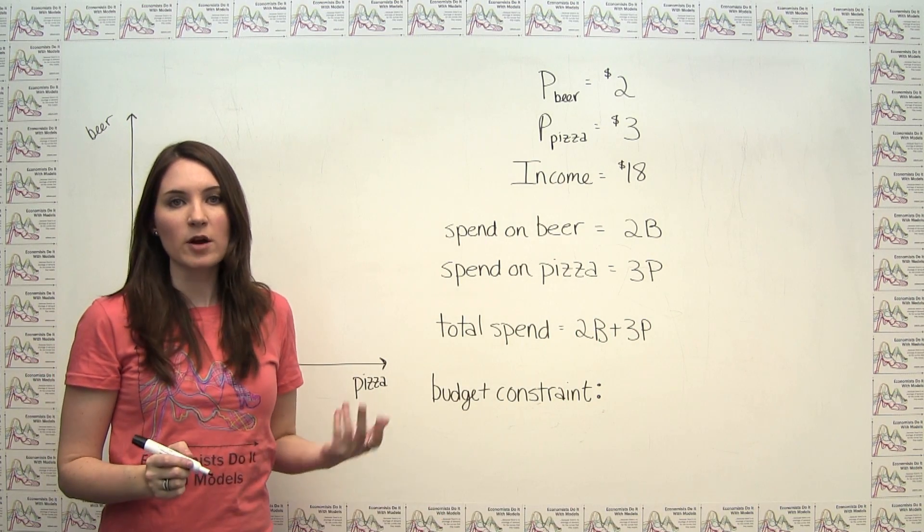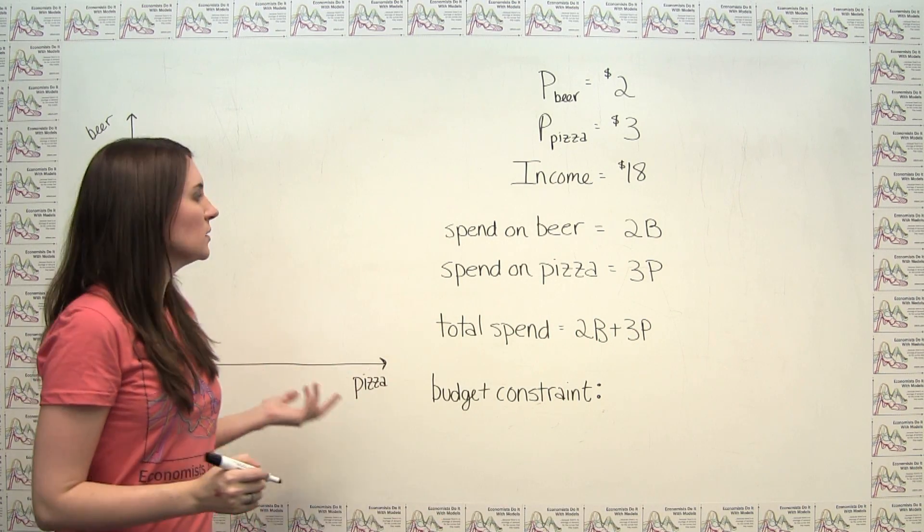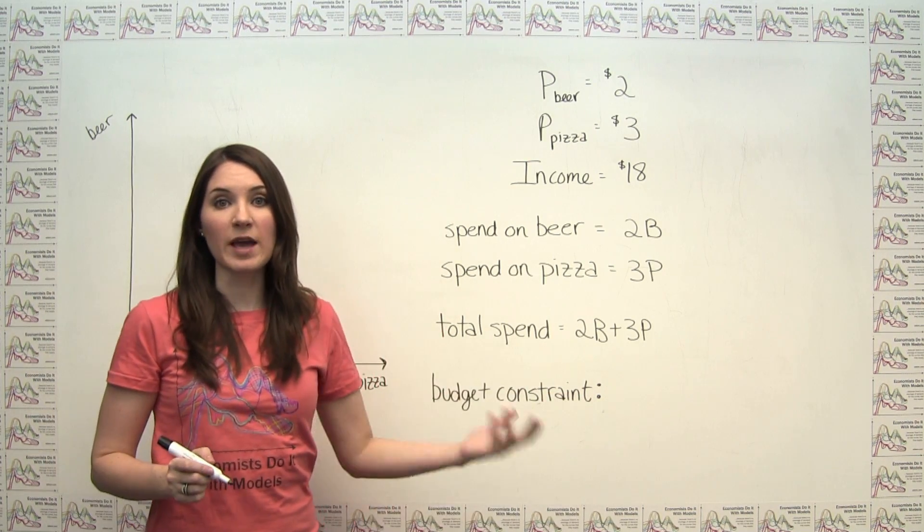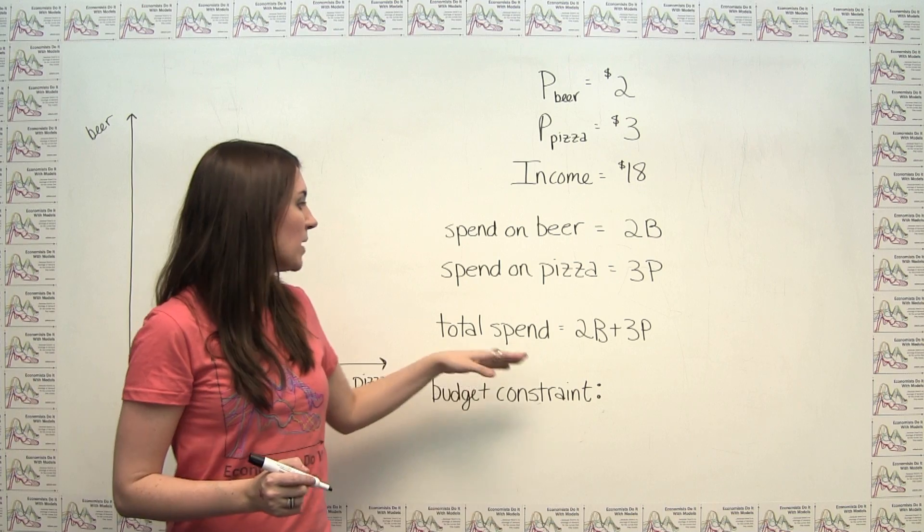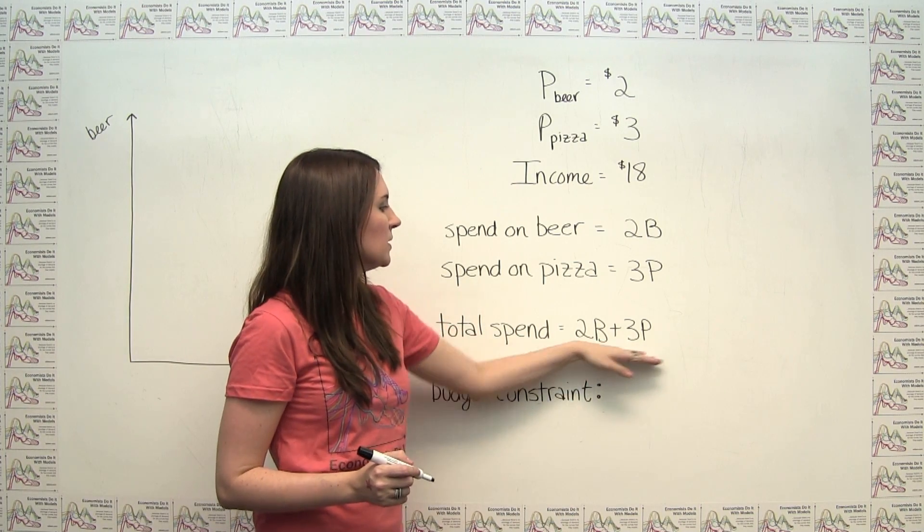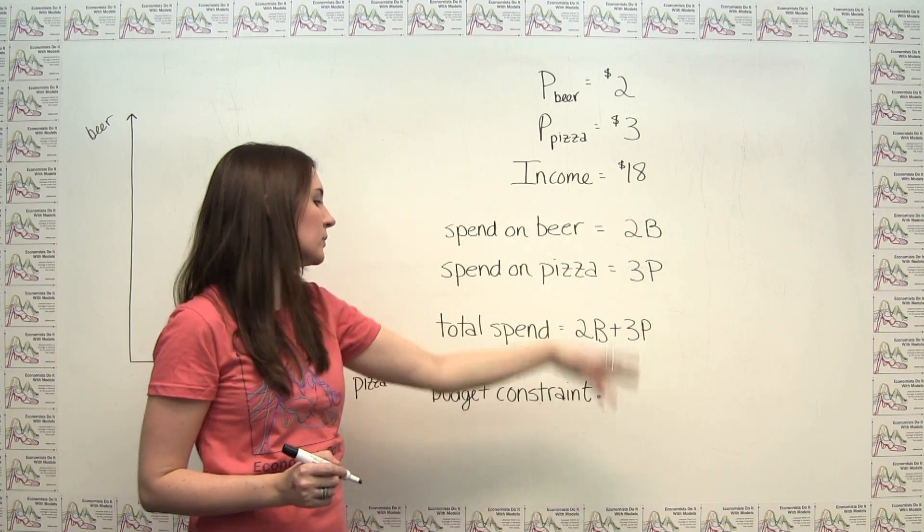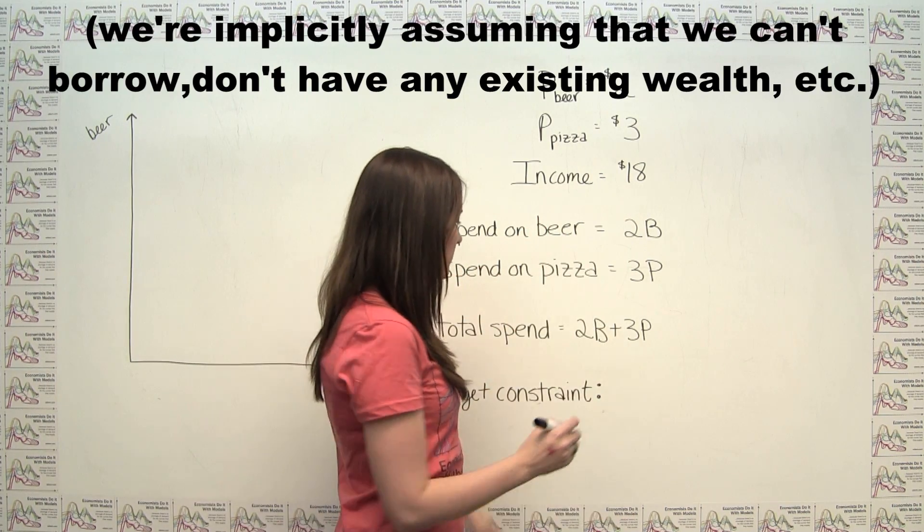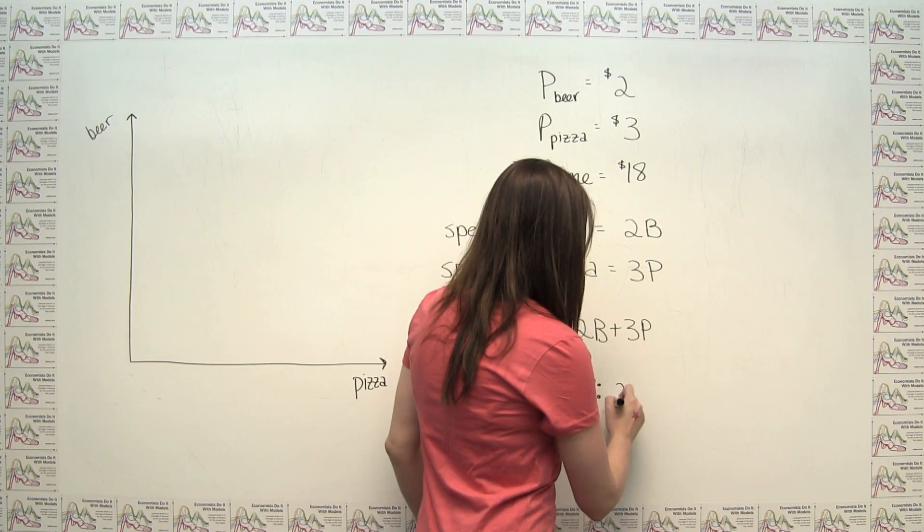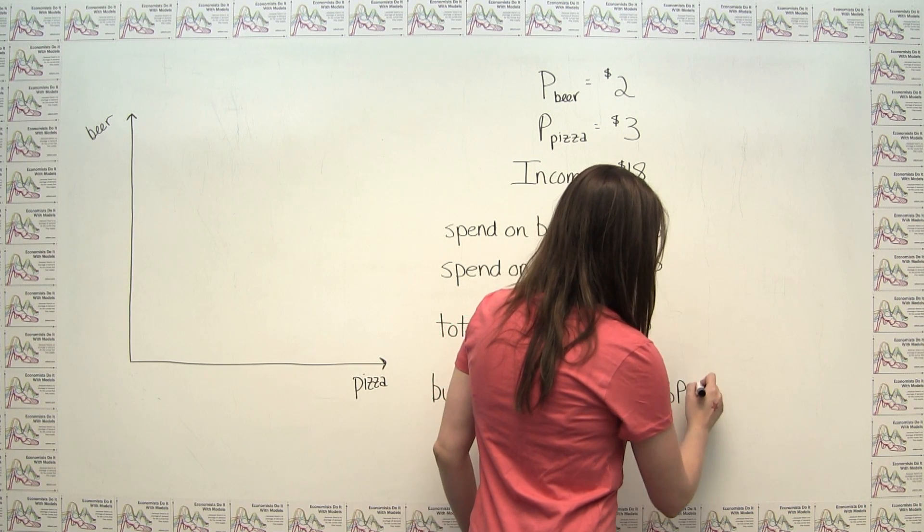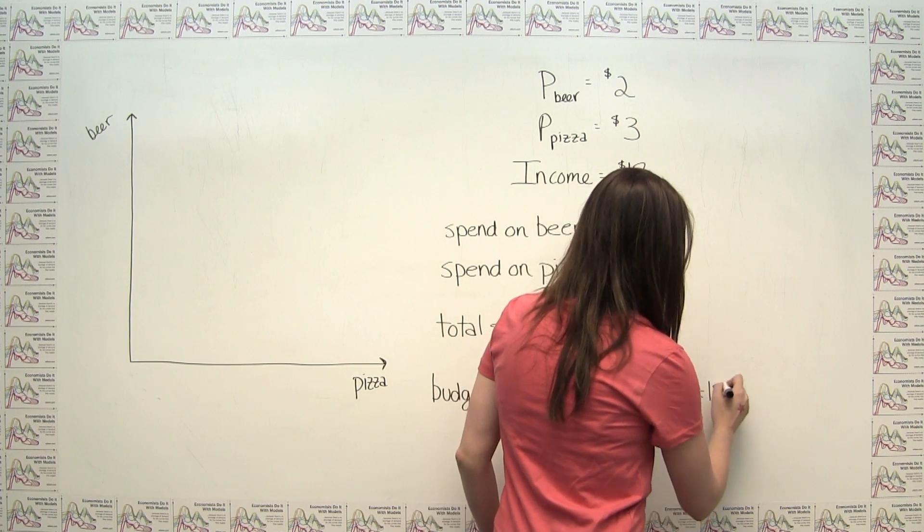So if we were going to think about our budget constraint, intuitively speaking, our budget constraint is that we can't spend more than we have, or in mathematical terms, what we're spending has to be less than or equal to our income. So we can say in this situation here that our budget constraint is that 2b plus 3p has to be less than or equal to 18.